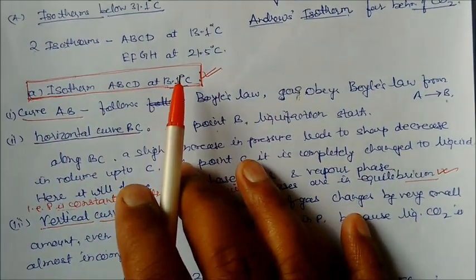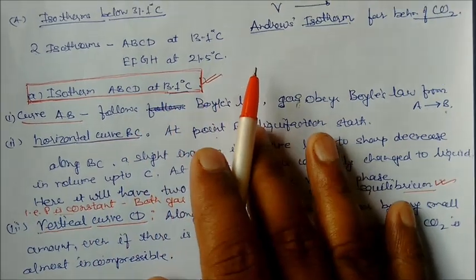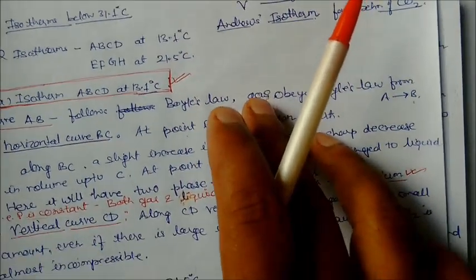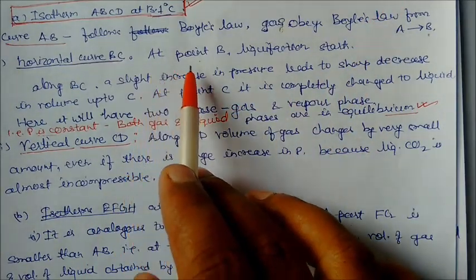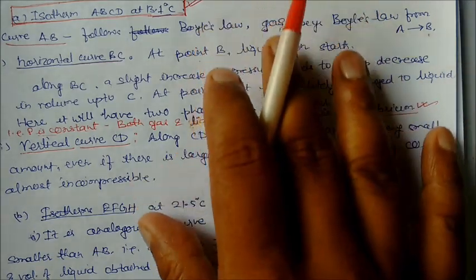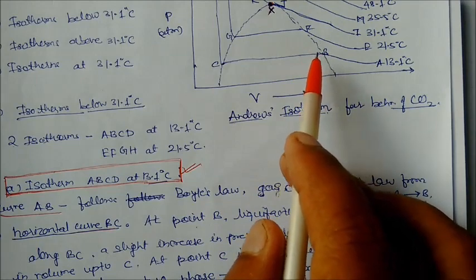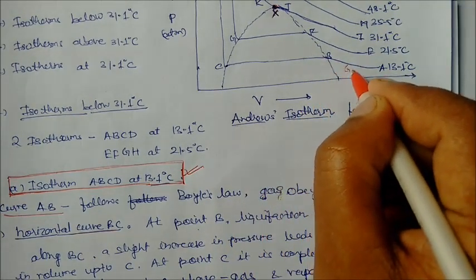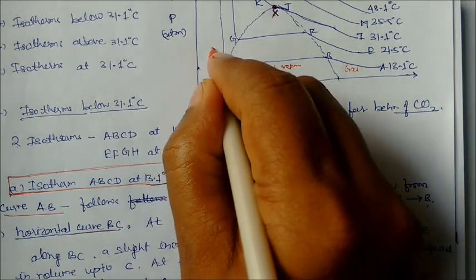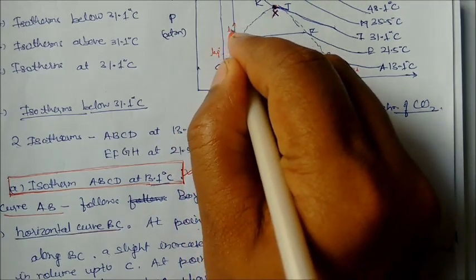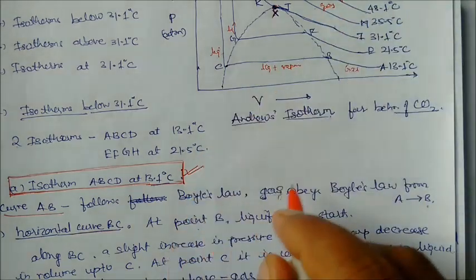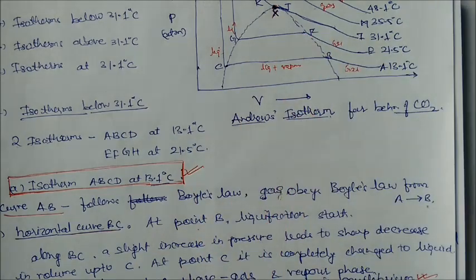For isotherm ABCD at 13.1°C: curve AB follows Boyle's law — this is the gas state. At point B, liquefaction starts. Between B and C, both liquid and vapor phases are present. At point C, the gas is completely changed into liquid. So the regions are: all gas (before B), liquid plus vapor phase (B to C), and complete liquid (after C).